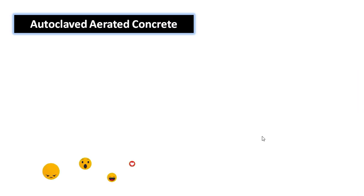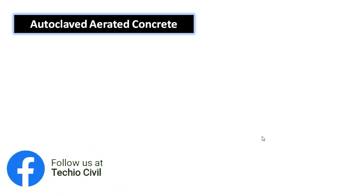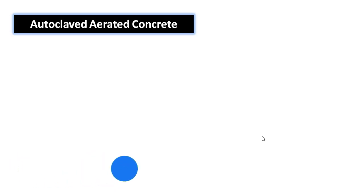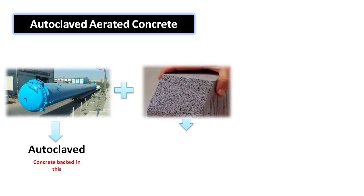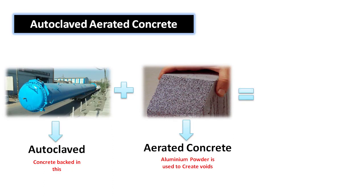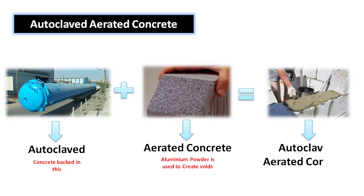Autoclaved Aerated Concrete is an eco-friendly building material made from natural raw materials such as sand, flyash, cement, lime, gypsum, and aluminium powder. The aluminium powder is used to create air in the concrete, which is why it is called Aerated Concrete. It is baked in an Autoclave, a type of furnace, which is why it is called Autoclaved Aerated Concrete. It is a lightweight, precast material with high fire resistance and better thermal insulation.